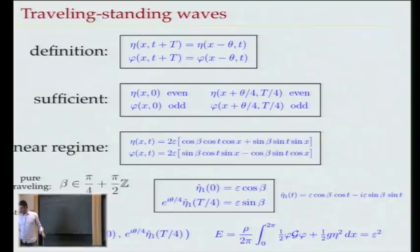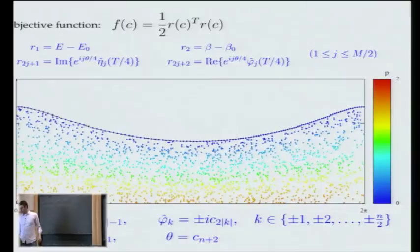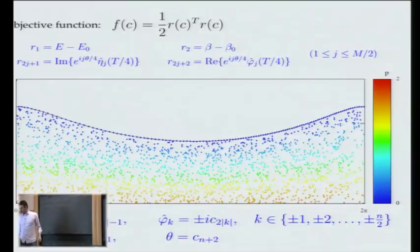I was also going to say some things about traveling-standing waves — they exist and are a pretty well-defined way of getting quasi-periodic behavior if the torus is only two-dimensional.